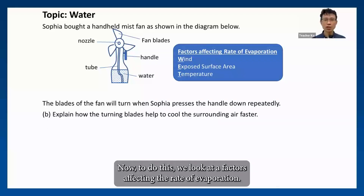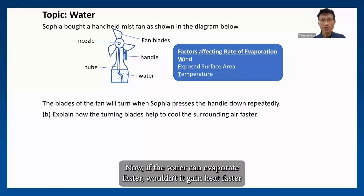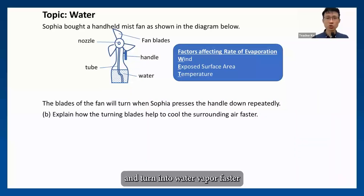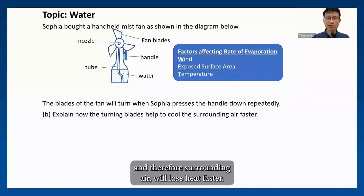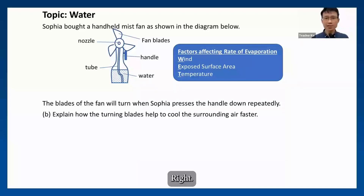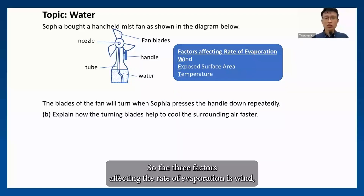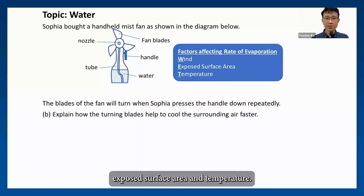To do this, we look at the factors affecting the rate of evaporation. If the water can evaporate faster, it gains heat faster and turns into water vapor faster, and therefore the surrounding air will lose heat faster. The three factors affecting the rate of evaporation are wind, exposed surface area, and temperature.